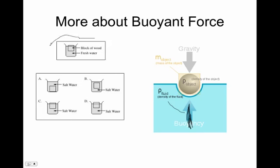Let's look at this block of wood floating in pure fresh water. Which picture — A, B, C, or D — would best represent what happens to the block of wood if we put it in salt water? Salt water has more particles in it than pure water and its density is greater. Therefore, its buoyant force will be greater and it will push the block of wood up higher. Picture D: the block of wood would be floating higher up in salt water than in pure water.